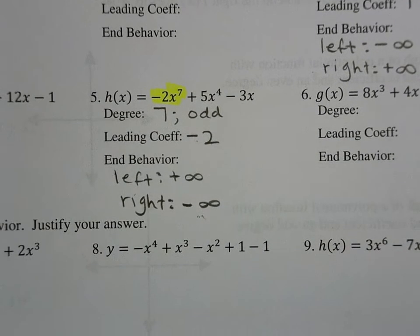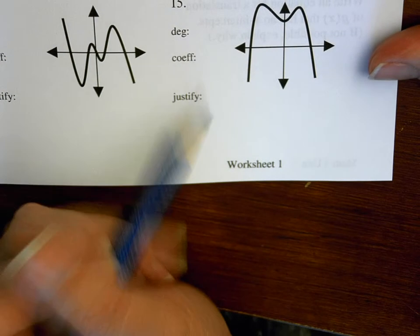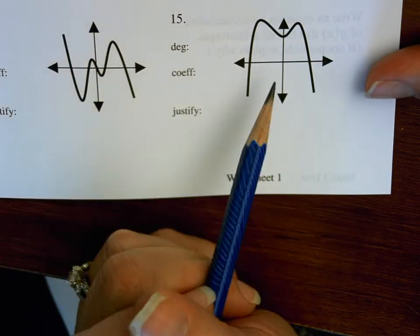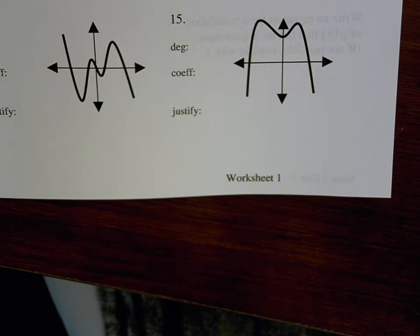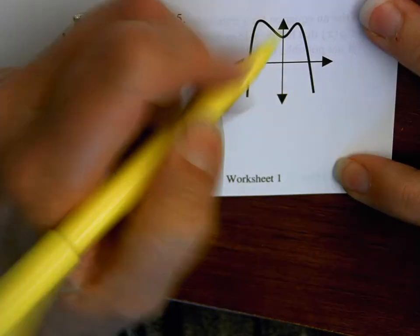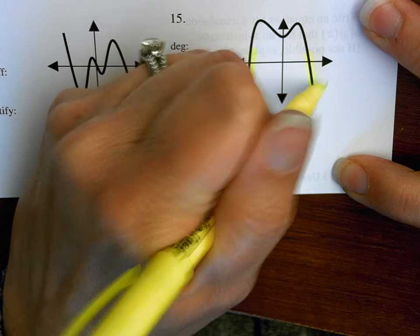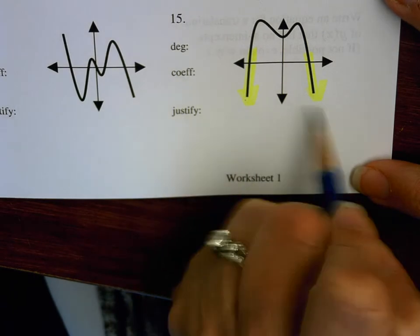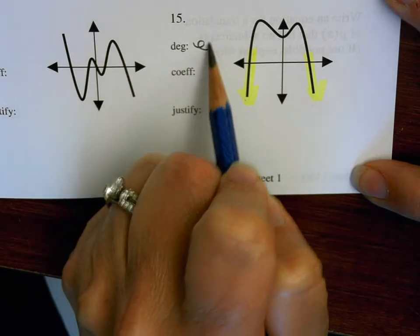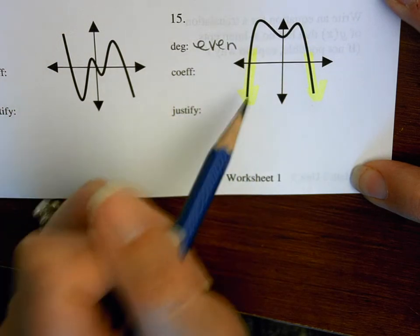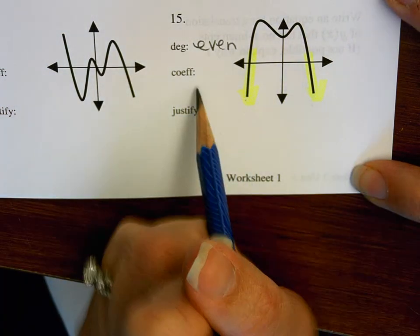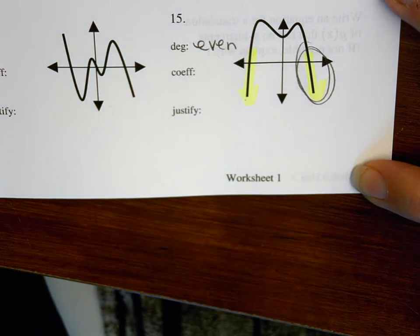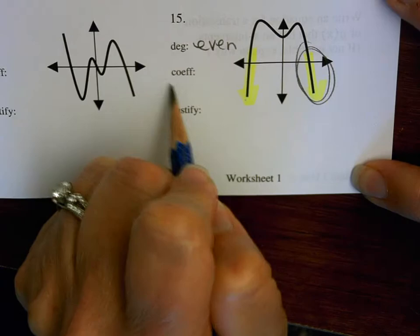Let's take a look at number 15. For number 15, they want us to identify whether the graph has an odd or even degree and a positive or negative leading coefficient. I always want to look at the endings. Because both ends are pointed down — going in the same direction — that means my degree has to be even. If they were going in opposite directions, it would be odd. My leading coefficient: I look at the right side — it's pointed down, so the coefficient will be negative.